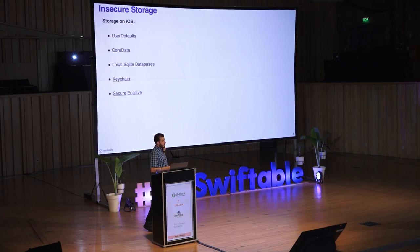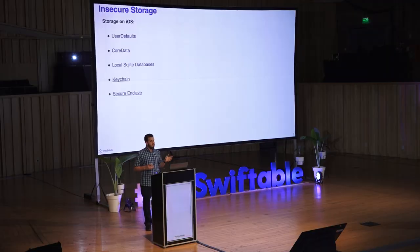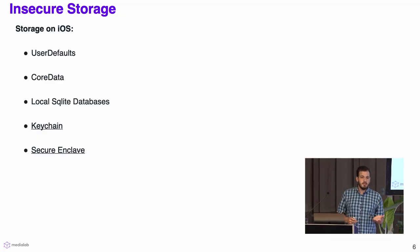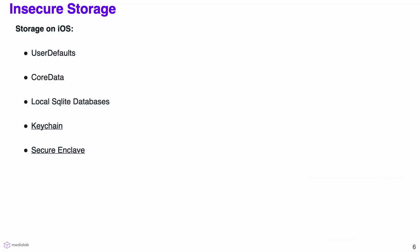The difference between these is that only the two last ones are protected by default by Apple. The keychain is a local database encrypted by the operating system. The secure enclave is a hardware coprocessor that can store some information, like private keys, to encrypt the keychain. This means that the rest of the storage options are not protected by default, so anyone with access to our app container folder can see and edit them.